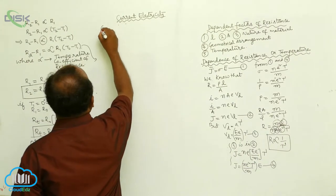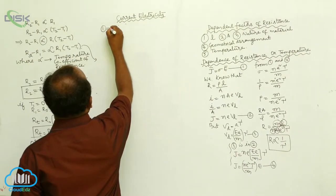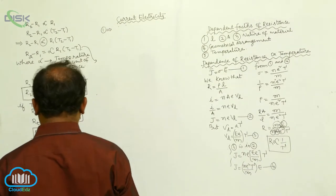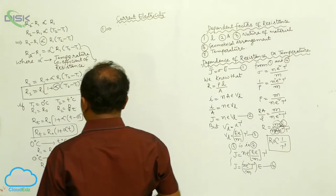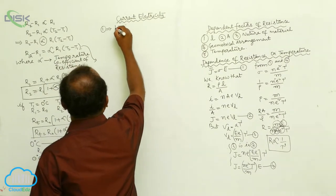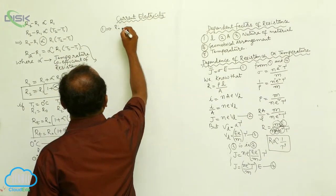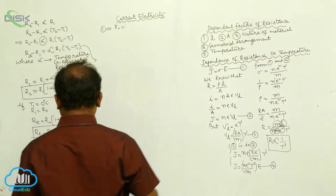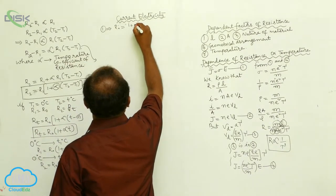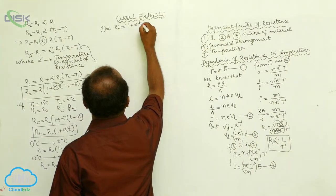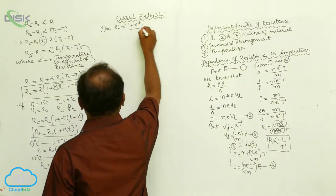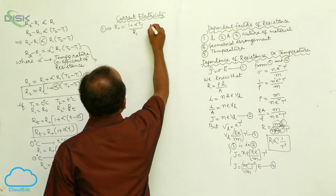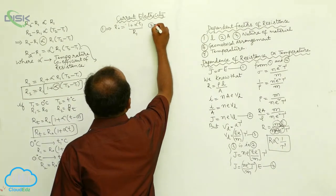From the first equation, R0 is equals to one place alpha into T1, that is R1. In other words, R0 equals R1 divided by one plus alpha times T1.